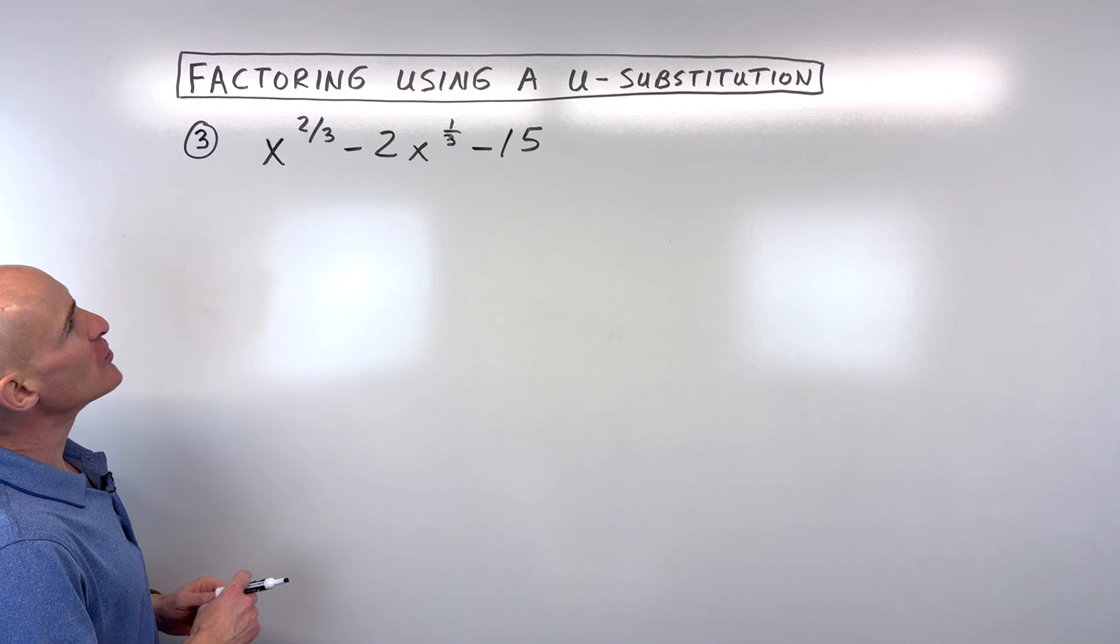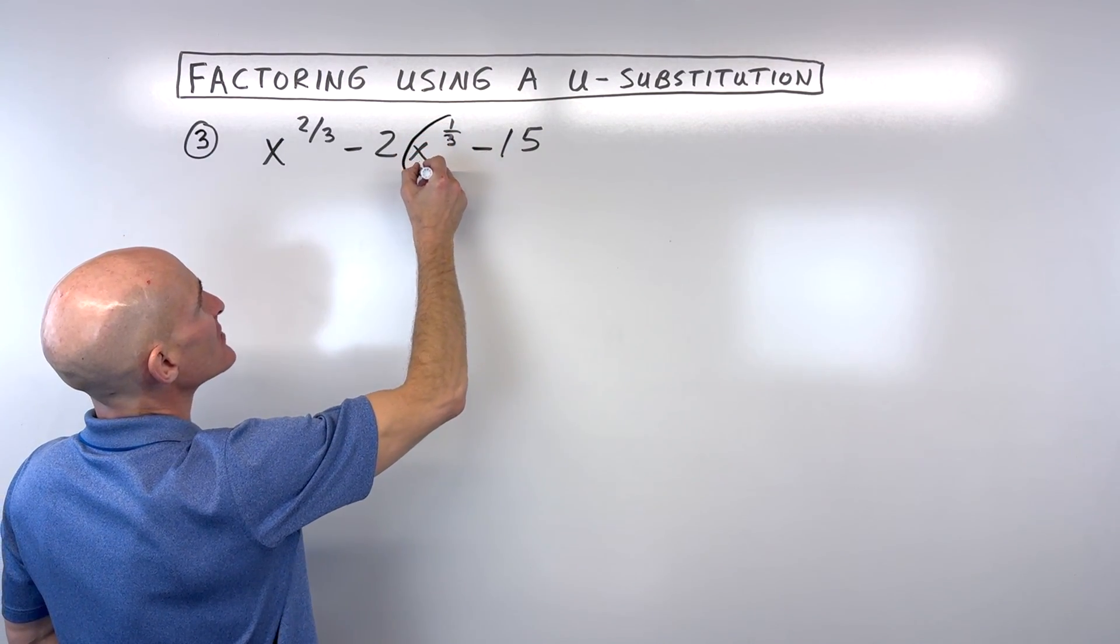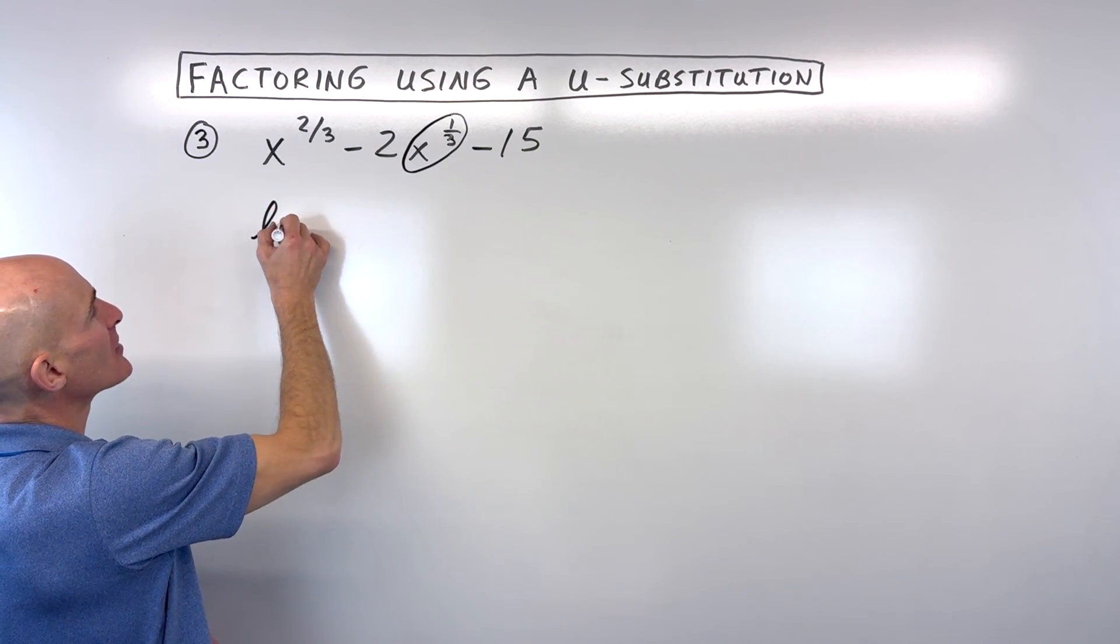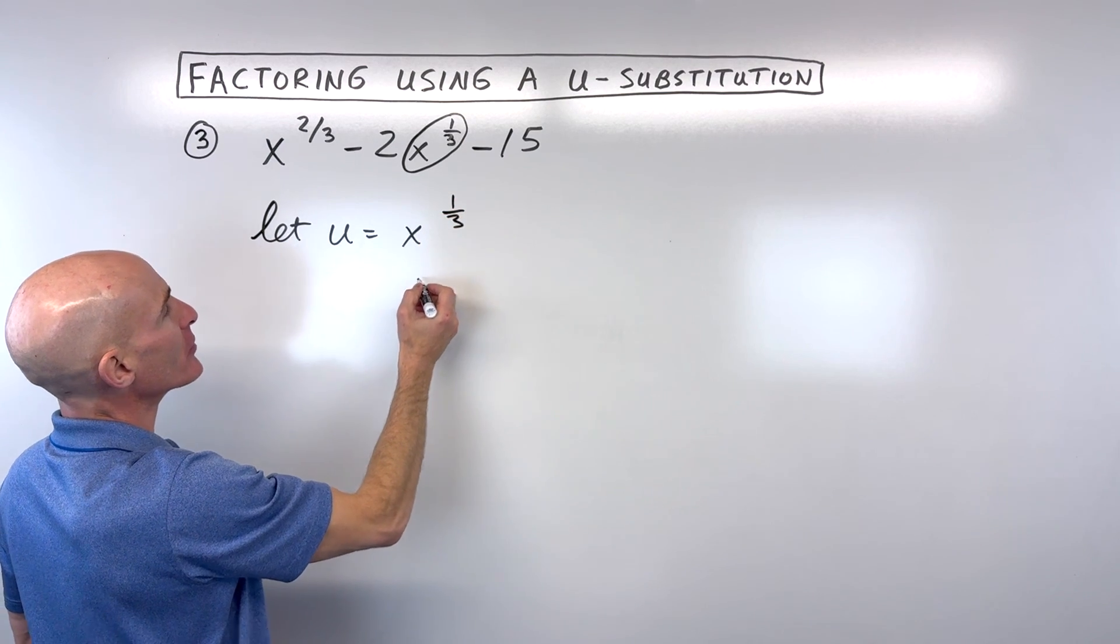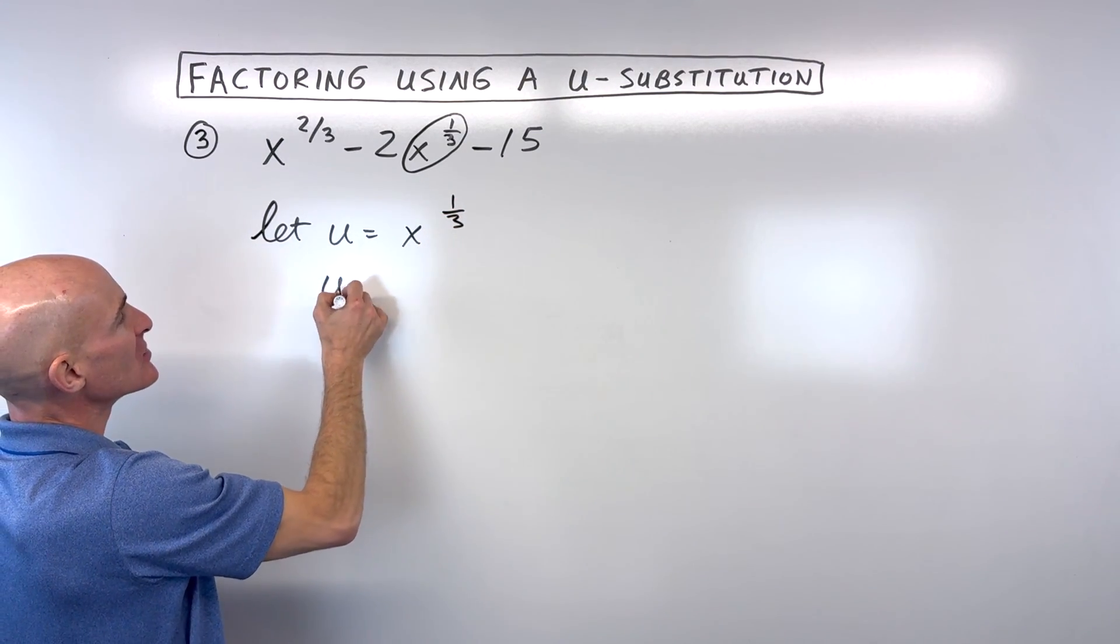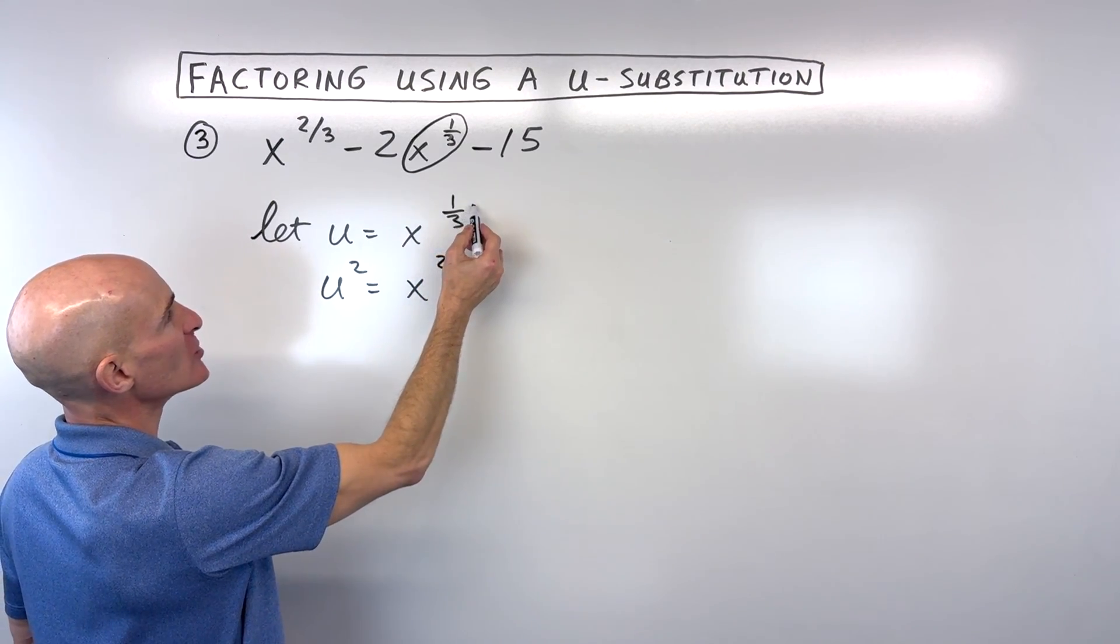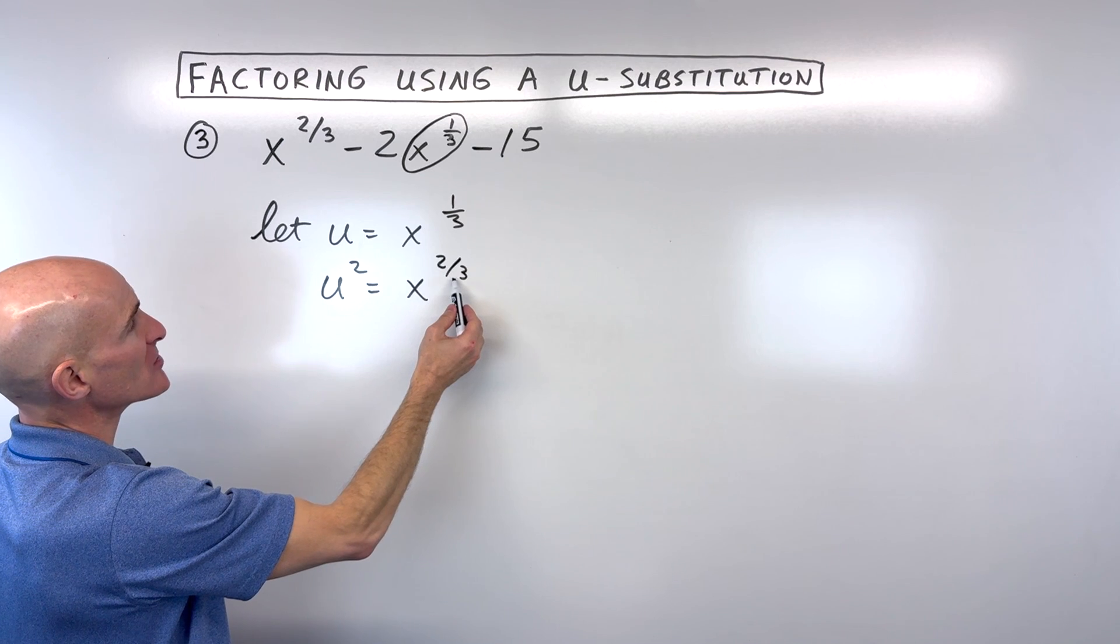what I would do is I would recognize that we've got this kind of weird group here, like this x to the one-third. So what I could think about is doing a u-substitution. I could say let u equal x to the one-third. And if I square both sides, u squared is equal to x to the two-thirds, because when you raise a power to a power, you multiply the exponent. So one-third times two is two-thirds.